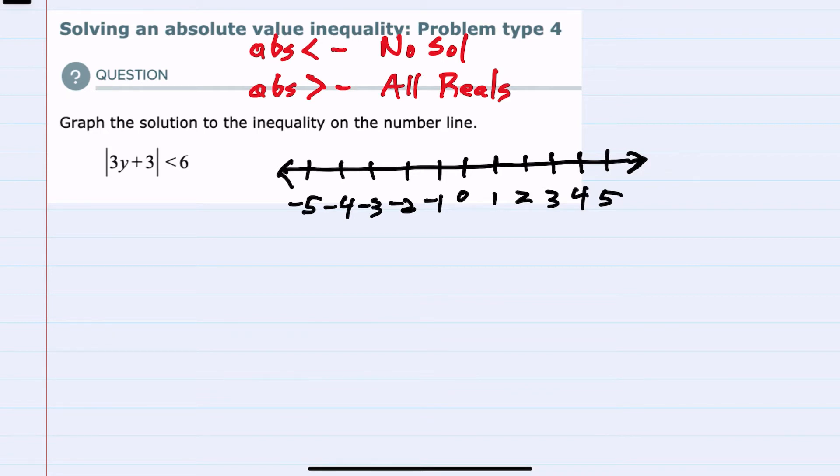Other than those two special situations, we could also have the absolute value less than a positive number. This would be an and situation, meaning that we would need both of our solutions to overlap.